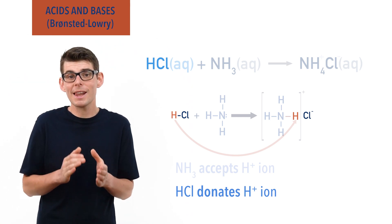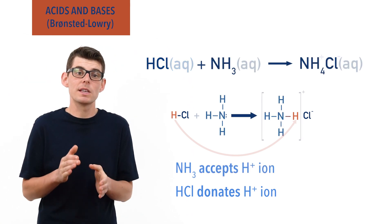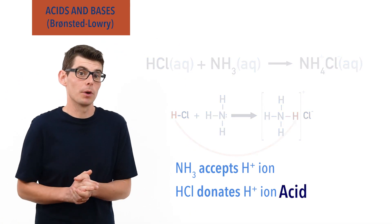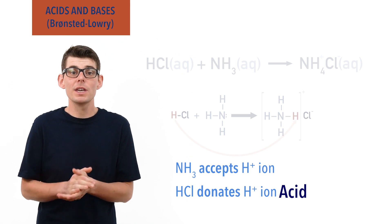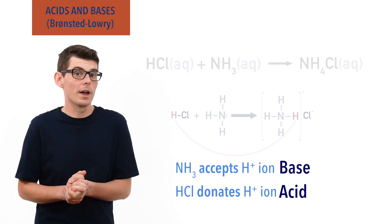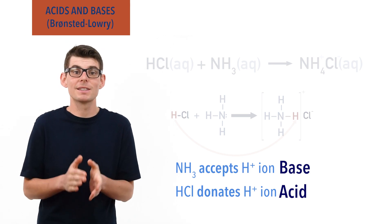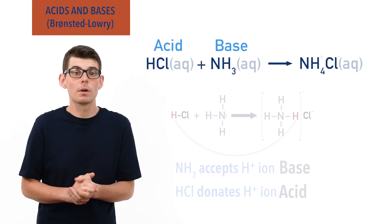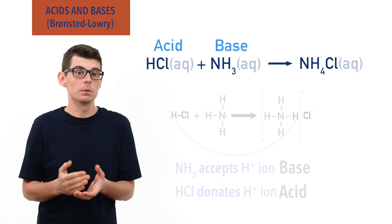Using the Bronsted-Lowry definition of acids and bases, we can see that the HCl is acting as an acid, donating a proton or H+ ion, and the NH3 is acting as a base, accepting a proton or H+ ion. Such a reaction can be described as an acid-base reaction, and the ionic compound ammonium chloride that gets formed is called a salt.